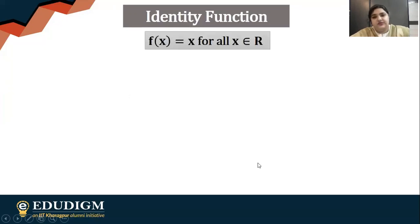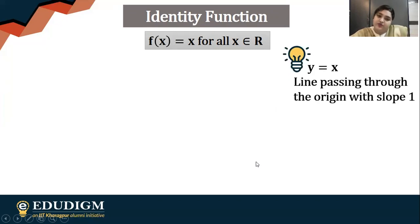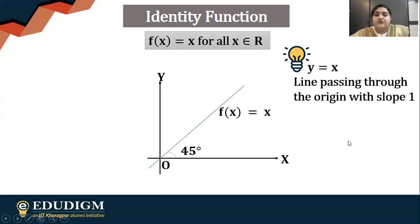So what do we do next? We try and draw the function. So you're going to plot y equals to x. It's a straight line passing through the origin with the slope one. So this is how it will look like. I hope you understand these two functions.